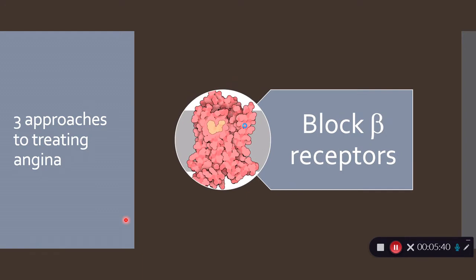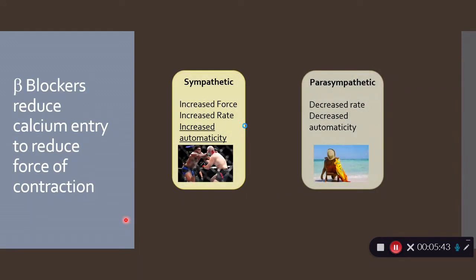Let's look at blocking beta receptors first. You'll remember that the heart is controlled by both the sympathetic and the parasympathetic autonomic nervous system. The sympathetic nervous system serves to increase the force and the rate of the way the heart contracts. It also increases the automaticity. Automaticity is the tendency of heart muscle to contract automatically. You can think of the sympathetic nervous system as being part of the fight or flight type of responses, so that helps to explain these effects.